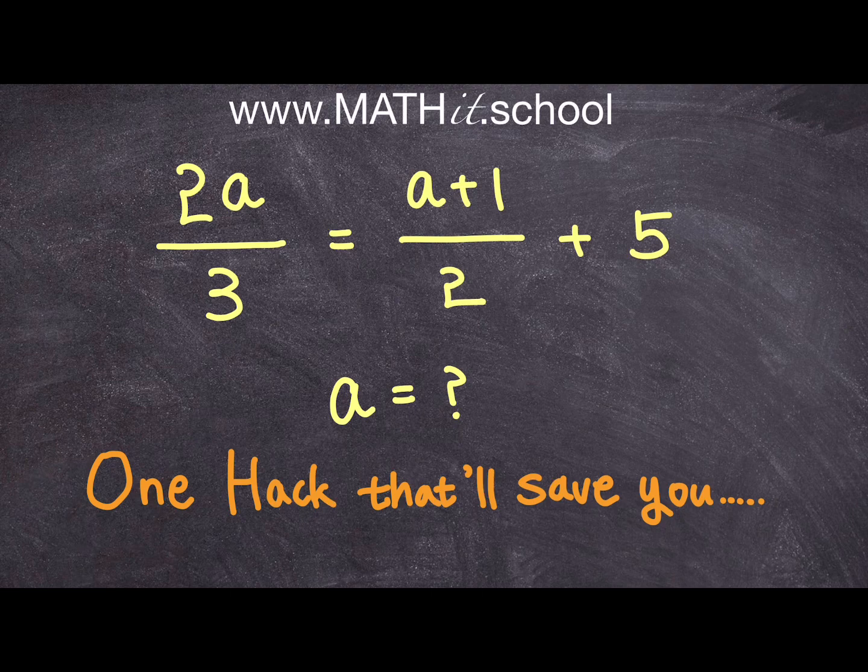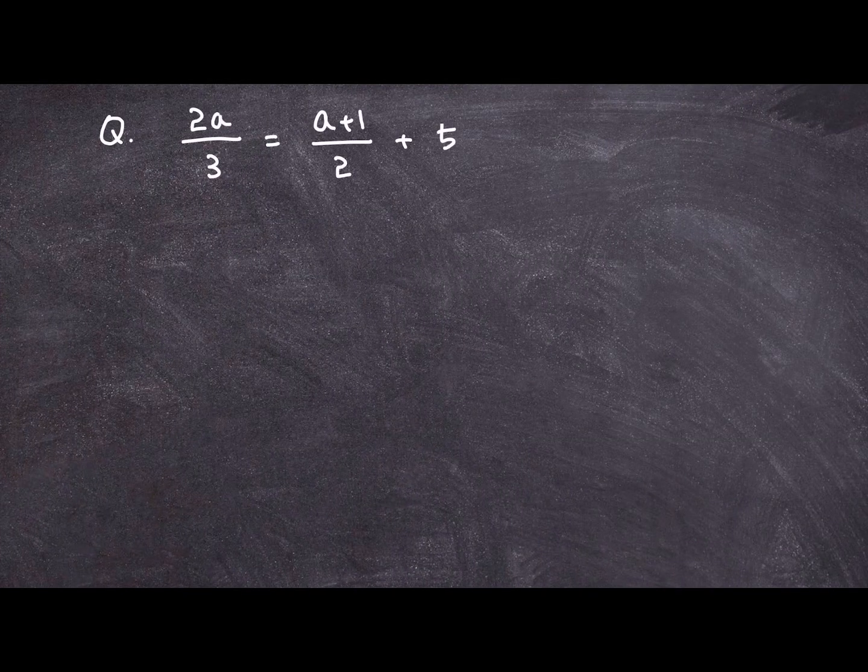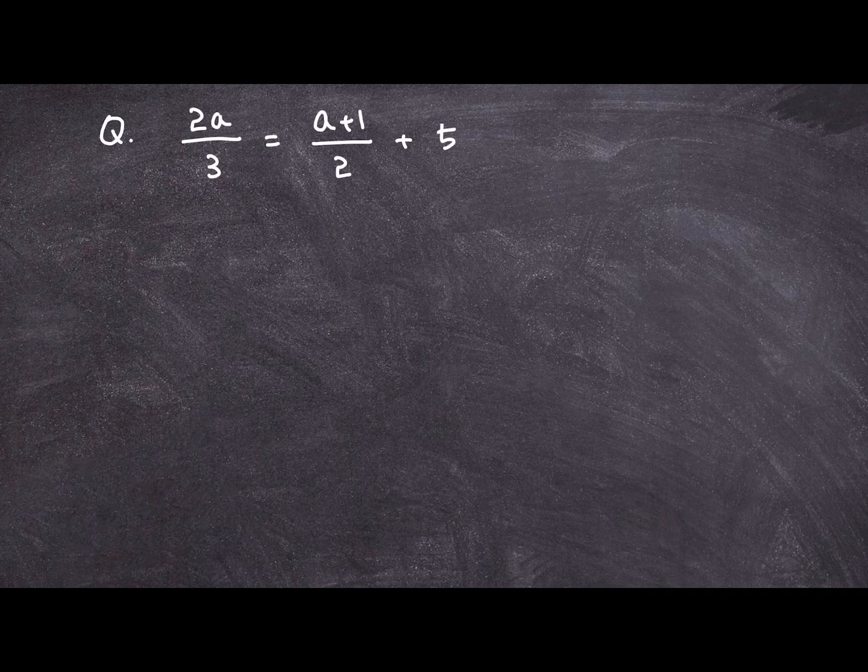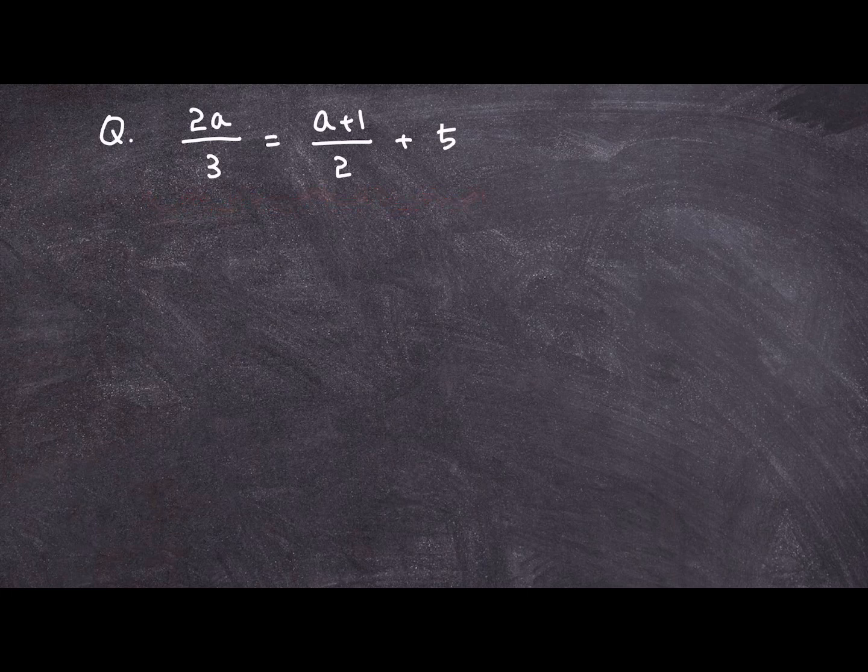Now let's get started on this question for you guys who do not know how to solve this with this little hack. So I have 2a over 3 is equal to a plus 1 over 2 plus 5. Now when you take a look at this, there is a way to simplify this expression for us to solve for a in an easier way.